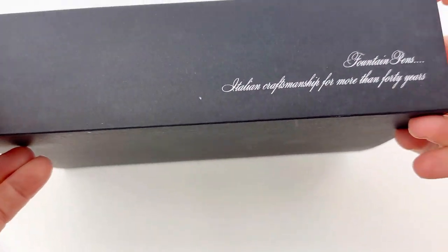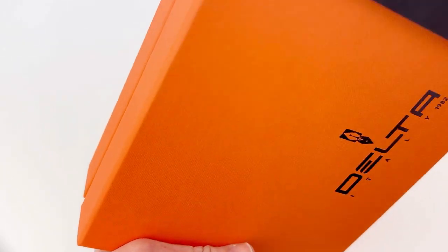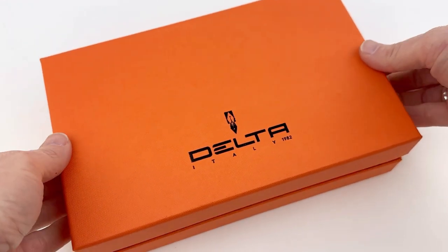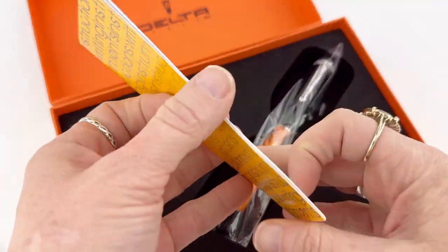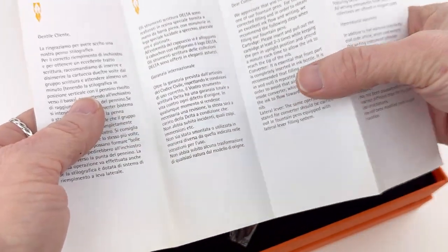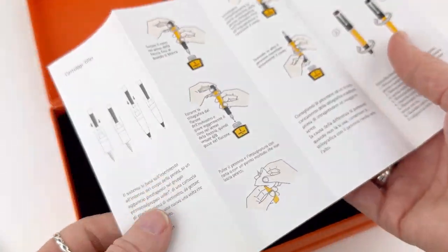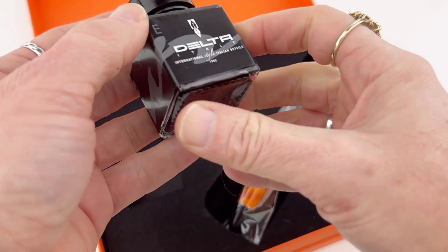We love seeing all the Delta pens arrive. This is the Delta Right Balance Dulce Vita fountain pen. The packaging is a little different and a lot of fun. I love this bright orange box covered in a black sleeve. It has the Delta logo and insert inside with all the information for your pen.